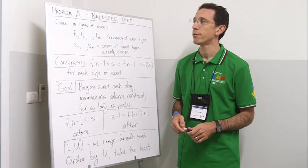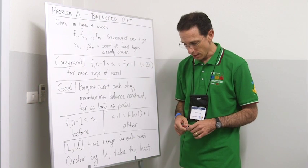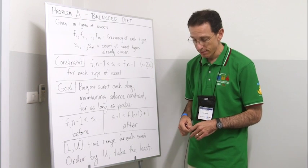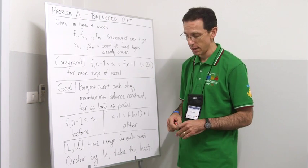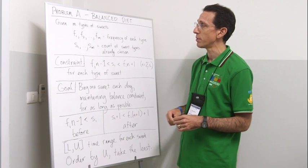Hi, my name is Greg Hammerly from Baylor University and I'm going to talk about problem A, balanced diet. This problem was the seventh problem in the contest to be solved today, and the first solution came after 43 minutes.